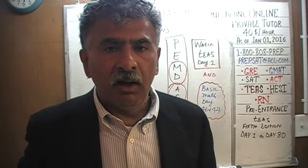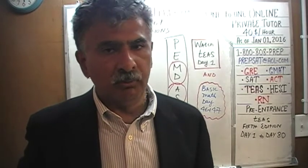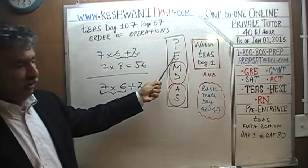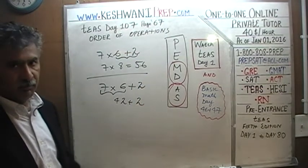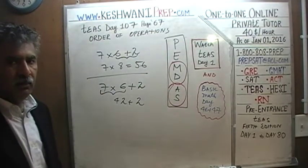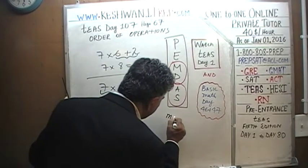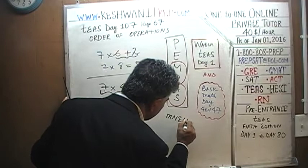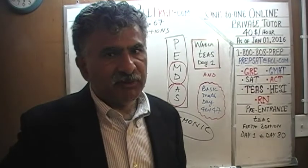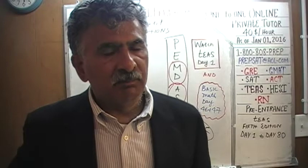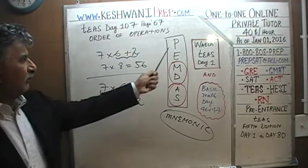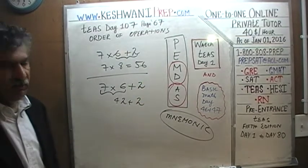So that we all agree ahead of time how we're going to do our calculations — all over the world. The order in which operations must be done: parentheses first, then exponents, then multiplication and division, then addition and subtraction. People use the first letters to make an acronym as a memory device — a mnemonic — called PEMDAS. It helps us remember the correct proper order of operations.